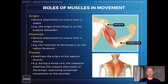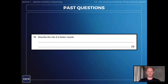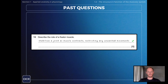That was everything you need to know on the roles of muscle in movement. Let's take a look at a couple of questions to put some of this information into context. The first question is to describe the role of a fixator muscle, which is to stabilise a joint as a muscle contracts, restricting any unwanted movements.